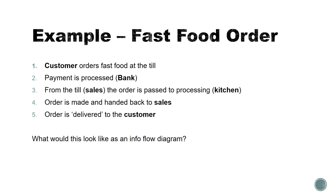I want to give an example of a fast food order. This is probably going to be easier than what you are doing for your coursework, because ultimately your coursework needs to be a little bit more in depth. But this is just to give you an example of what you should be doing before you even set out creating your flow diagram. You could make this more complex than it really is, but I think for this example you should just streamline it back to what should ideally happen.